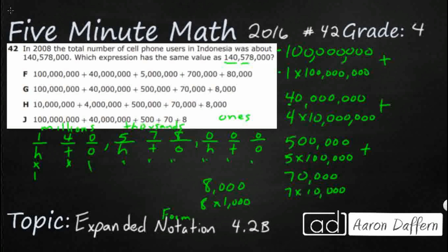So let's check our work here. We've got 100 million, 40 million, 500,000. And so it looks like our answer is going to be here, G.